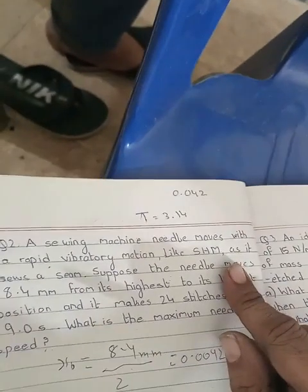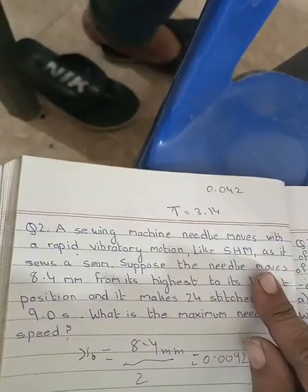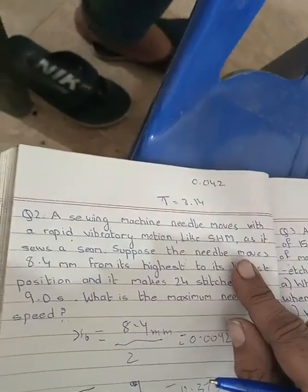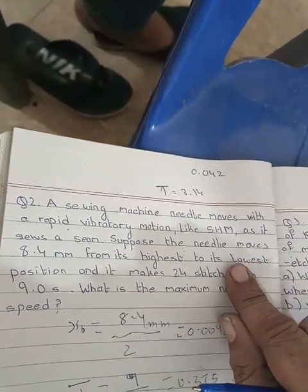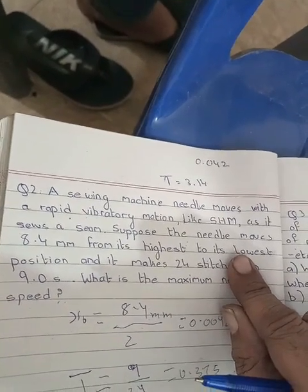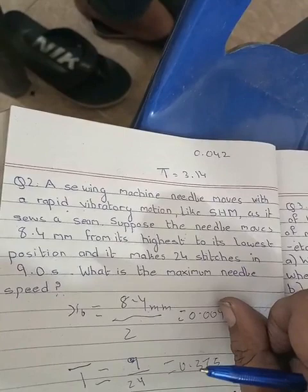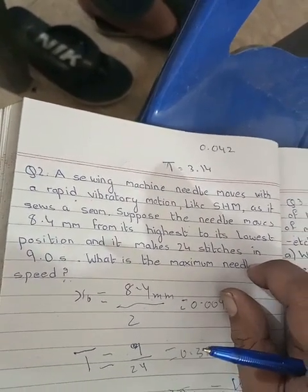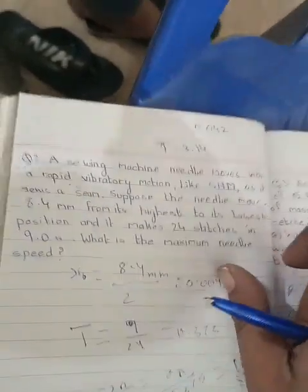Question number two: A sewing machine needle moves with a rapid vibratory motion like simple harmonic motion. Suppose the needle moves 8.4 millimeters from its highest to its lowest position and it makes 24 stitches in 9 seconds. What is the maximum needle speed?